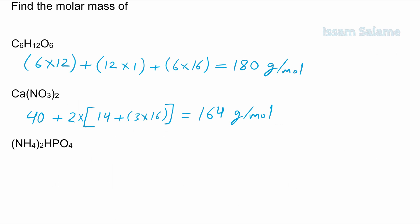So let's go back to the formula. Here we have 2 times the molar mass of nitrogen, which is 14, added to 4 hydrogen atoms. Then we add it to 1 hydrogen, 1 phosphorus, and 4 oxygen atoms.